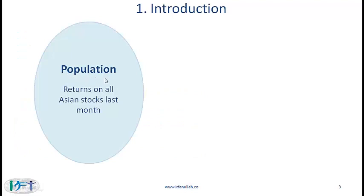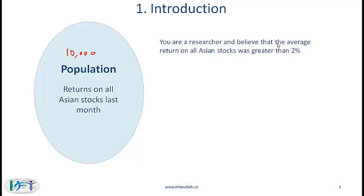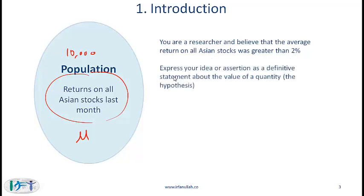Let's say you have a population which consists of returns on all Asian stocks last month. Assume there are about 10,000 publicly listed stocks in Asia, so you have 10,000 numbers. You are a researcher and believe that the average return on all Asian stocks was greater than 2%. You have a view about the population mean, denoted by mu, and your assessment is that the mean return was greater than 2%.